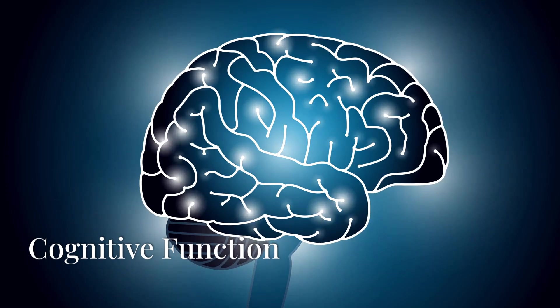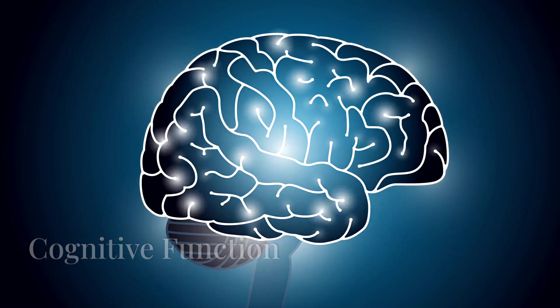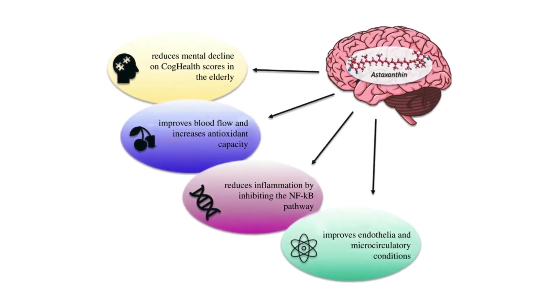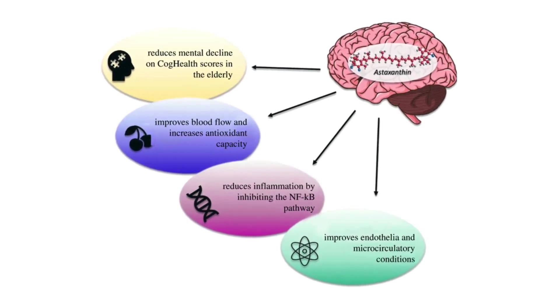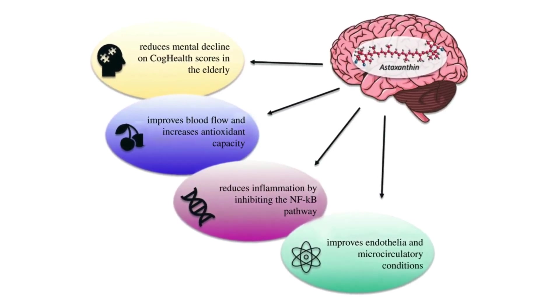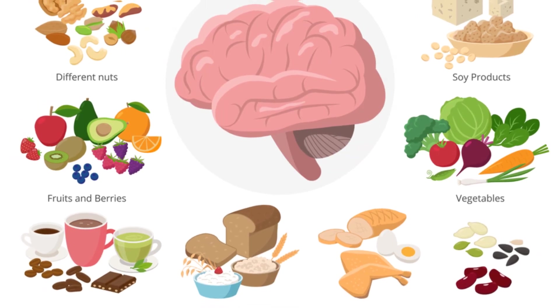Astaxanthin also supports brain health and cognitive function. It crosses the blood-brain barrier and provides neuroprotective effects, reducing oxidative stress and inflammation in the brain. This can help lower the risk of neurodegenerative diseases like Alzheimer's and Parkinson's, promoting better cognitive health as we age.